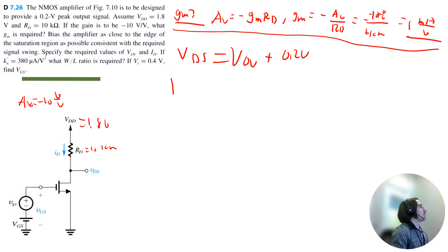Because we can express the gain magnitude as VDD minus VDS divided by 0.5 V overdrive. So therefore this gets us 10 equal to 1.8 minus VDS divided by 0.5 times V overdrive.